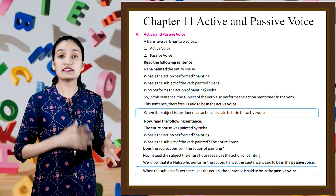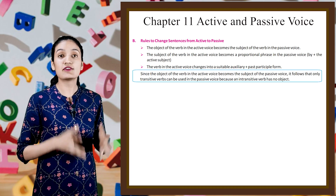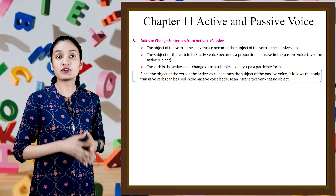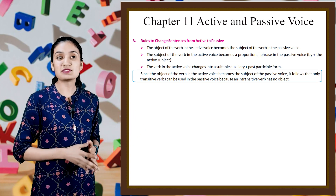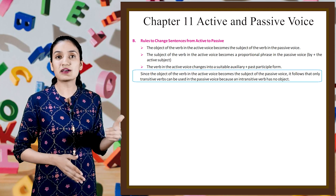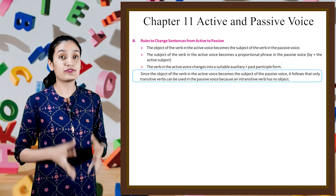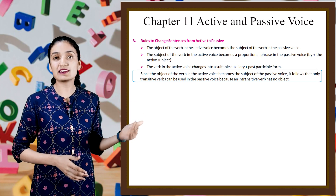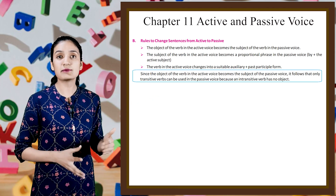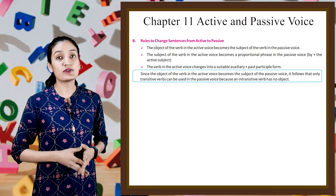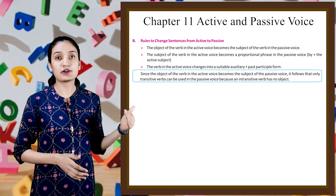Students, when the subject of a verb receives the action, the sentence is said to be in passive voice. Now, rules to change sentences from active to passive: The object of the verb in the active voice becomes the subject of the verb in the passive voice. The subject of the verb in the active voice becomes a prepositional phrase — 'by' plus the active subject. The verb in the active voice changes into a suitable auxiliary plus past participle form. Since the object in the active voice becomes the subject of the passive voice, only transitive verbs can be used in passive voice, because an intransitive verb has no object.